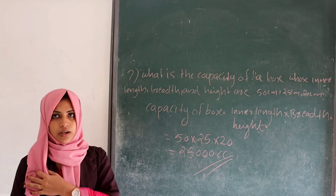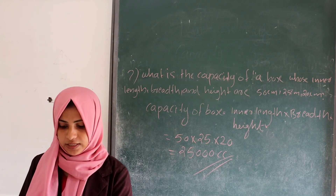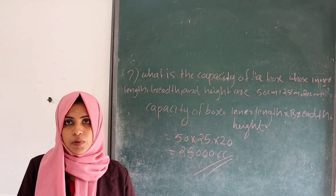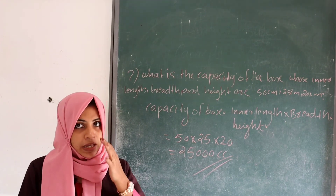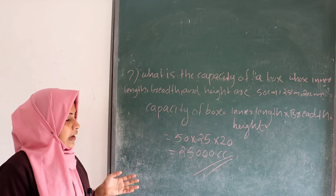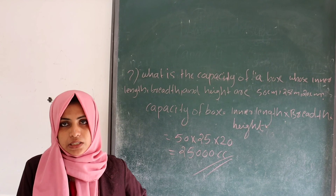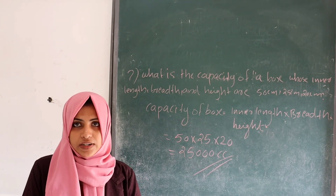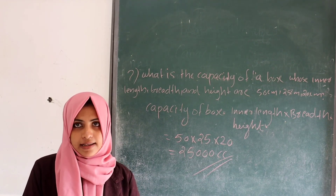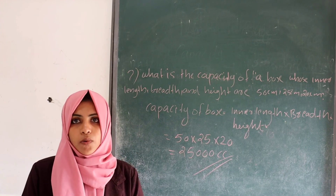This is the question related to capacity. For finding capacity, we multiply the inner length, breadth, and height. In this topic, we learned what 1 cubic meter is — it equals 10 lakh cubic centimeters — and how the volume of large measures is expressed as cubic meters. Capacity means the measure contained inside a tank or vessel, and to find it, we multiply the inner length, breadth, and height. I hope all of you understand. Thank you.